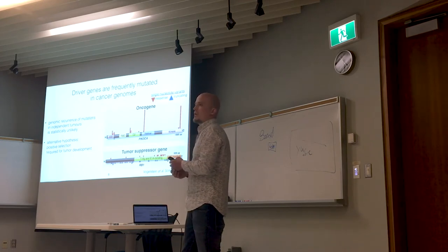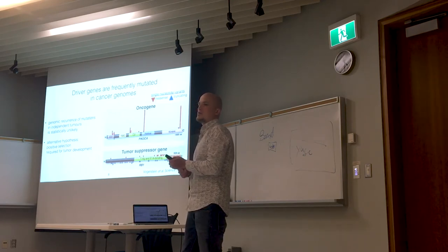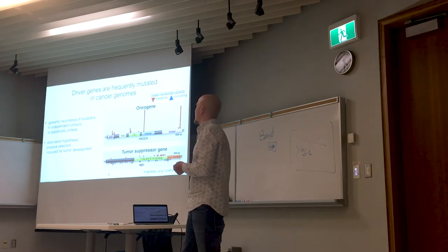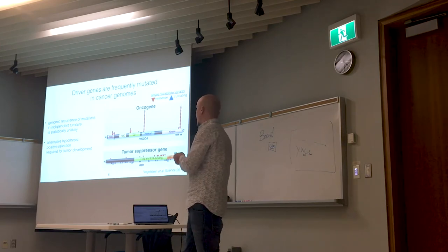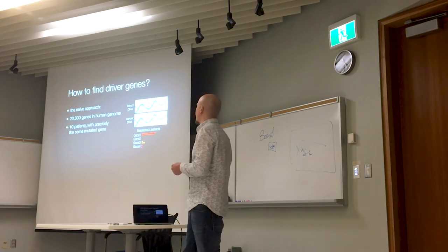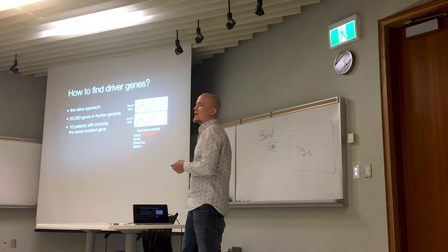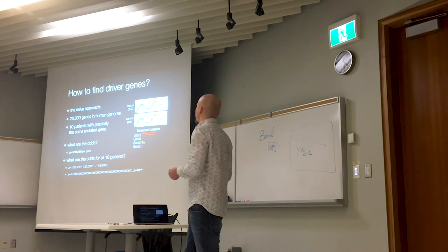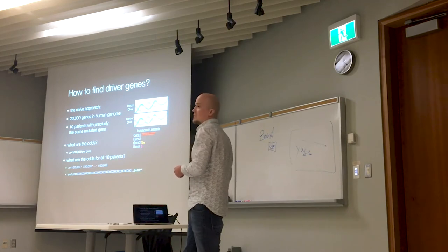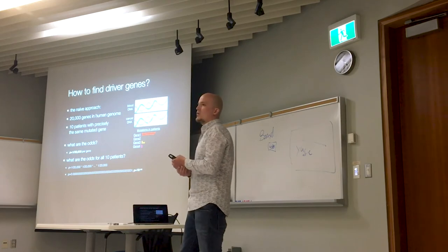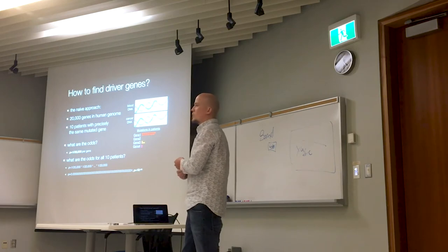The genome is a very large space. If you have one mutation per patient and it recurs at exactly the same spot, it's statistically very unlikely to happen by chance. The alternative hypothesis is that the recurrence of a mutation in the same gene, nucleotide, or pathway represents positive selection required for tumor development. The naive approach: with 20,000 genes and 10 patients each mutated in the same gene, the probability is extremely small. But this naive model makes incorrect assumptions — such as all patients being equally mutated and all genes being of equal length.